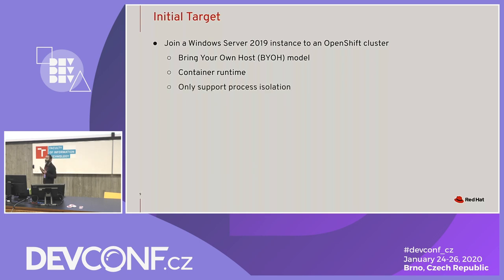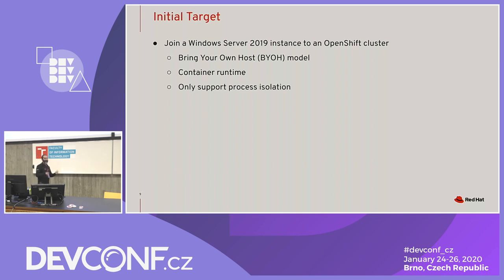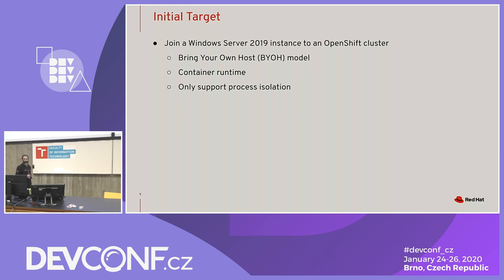To start things off, we decided to only support process isolation, because if you want to do Hyper-V isolation, you need virtualization support — in many clouds, that means nested virtualization. So we're only dealing with process isolation in the short term.